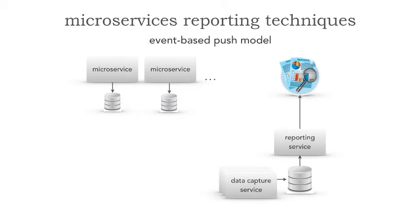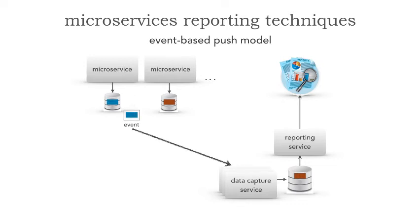It's called an event-based push model. Notice what I did here — I changed the topology so that we now have reporting services, but we also have a reporting database. We have these data capture services, which could be bound to a specific microservice or bound to a domain, which is mostly typical. As each microservice gets data of concern, it pushes that data out asynchronously to an event, which is then captured by these services — this is called a data pump. In other words, I'm pumping out data.